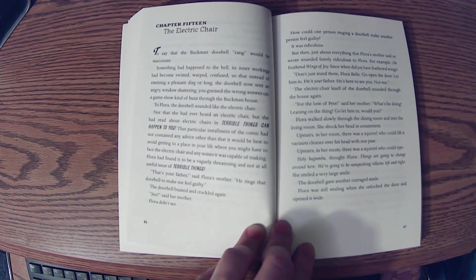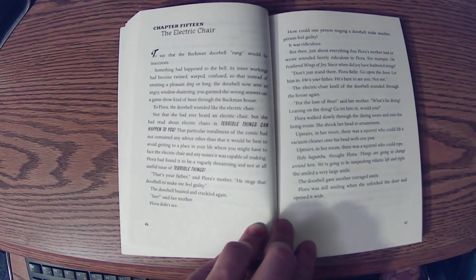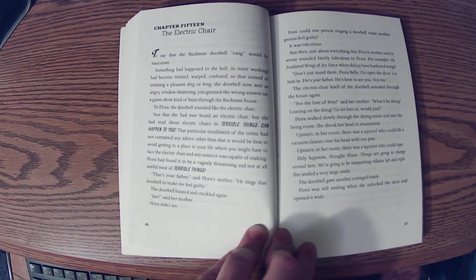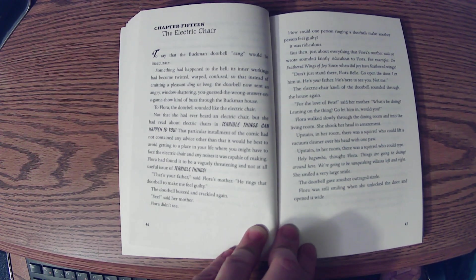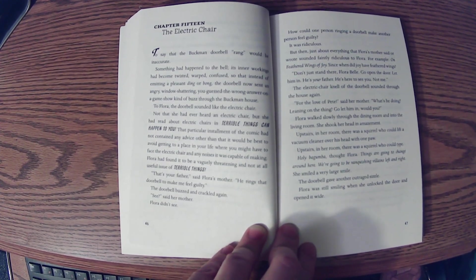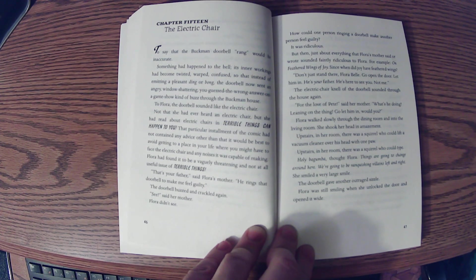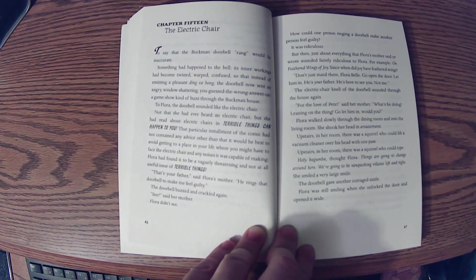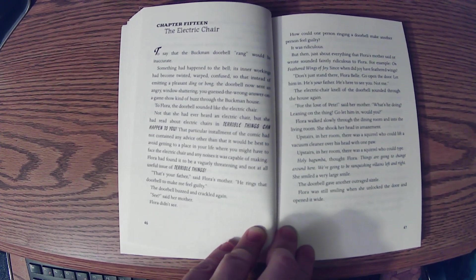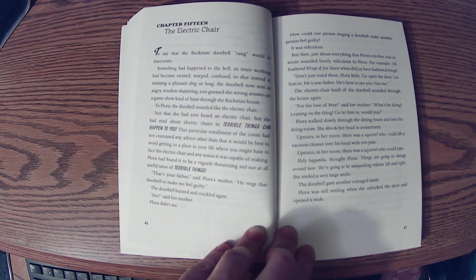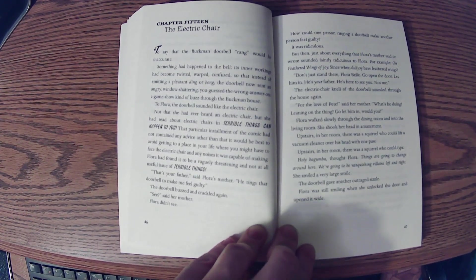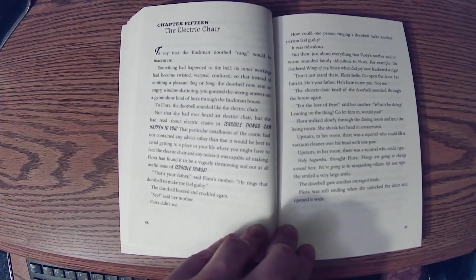That's your father, said Flora's mother. He rings that doorbell to make me feel guilty. The doorbell buzzed and crackled again. See, said her mother. Flora didn't see. How could one person ringing a doorbell make another person feel guilty? It was ridiculous. But then, just about everything that Flora's mother said or wrote sounded faintly ridiculous to Flora. For example, on feathered wings of joy. Since when did joy have feathered wings?